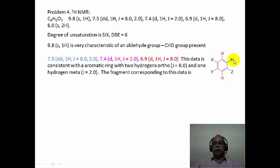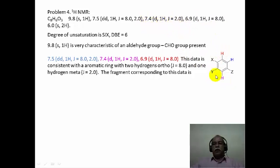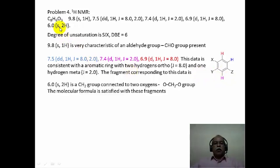The red hydrogen has an ortho coupling partner of about 8 Hz, and the blue hydrogen has both the 8 Hz ortho coupling and the 2 Hz meta coupling partner. So the 7.5 delta corresponds to the blue hydrogen, 6.9 to the red, and 7.4 to the magenta-colored hydrogen. The signal at 6.02 ppm of 2 hydrogen intensity as a singlet would only be a di-oxygen substituted methylene group — in other words, a methylenedioxy group.